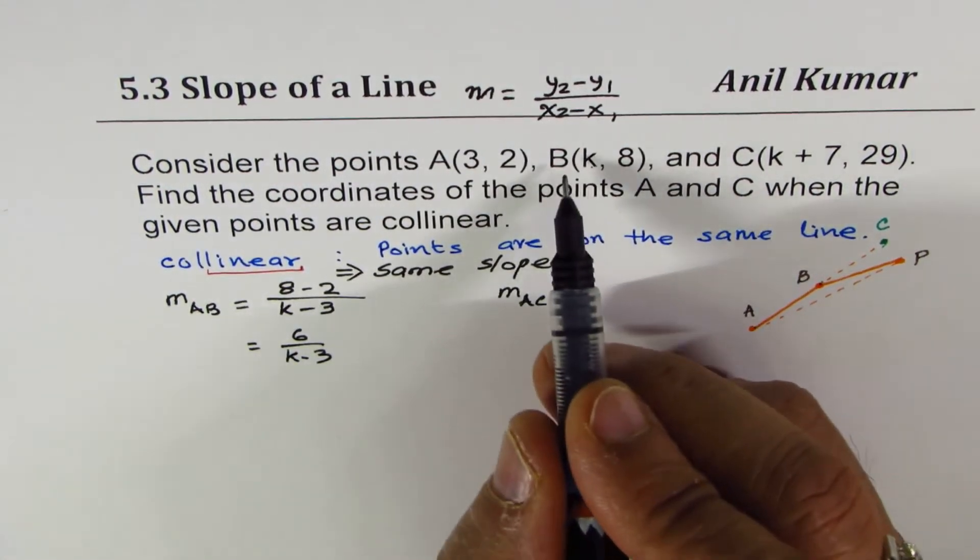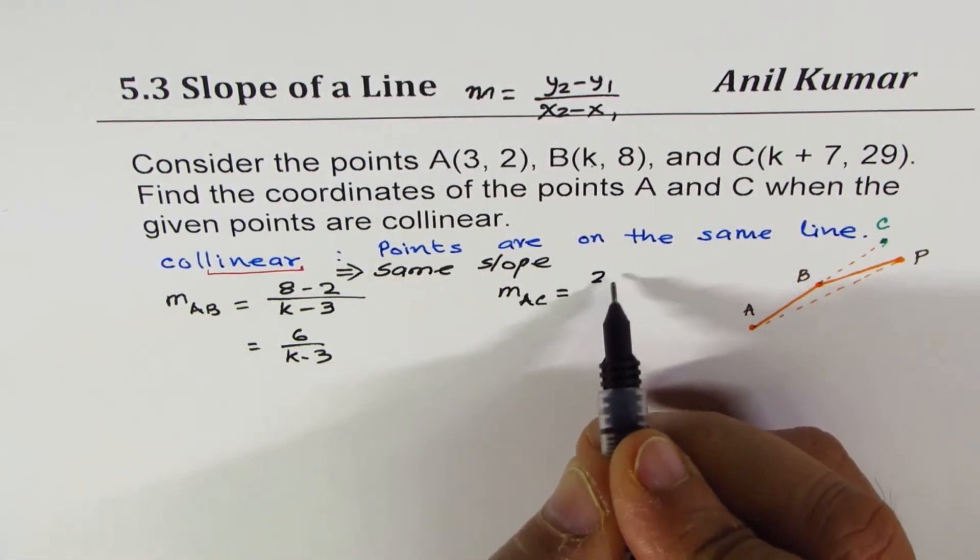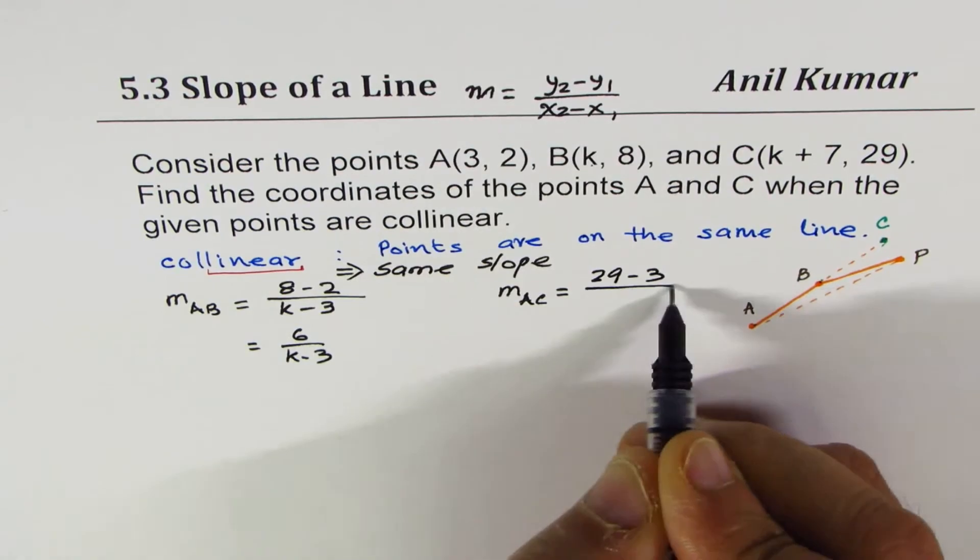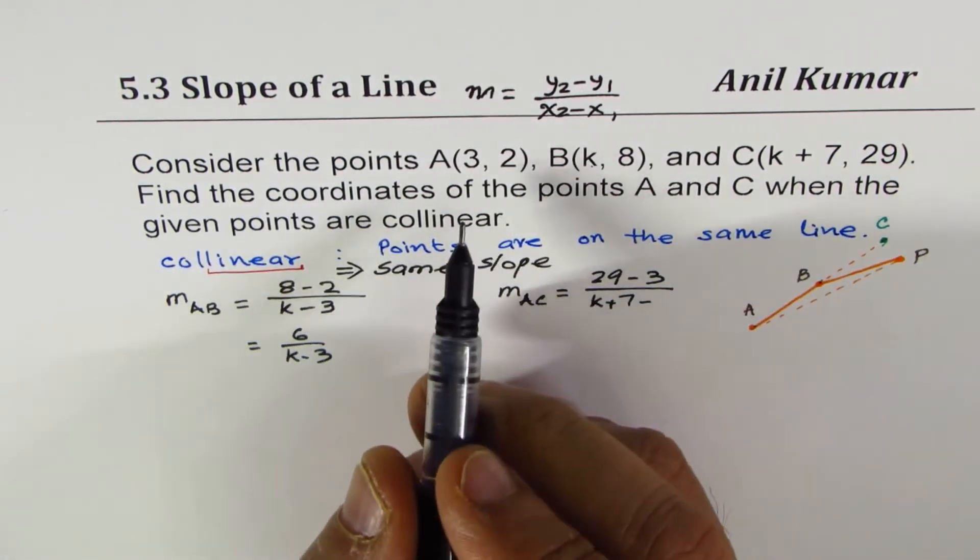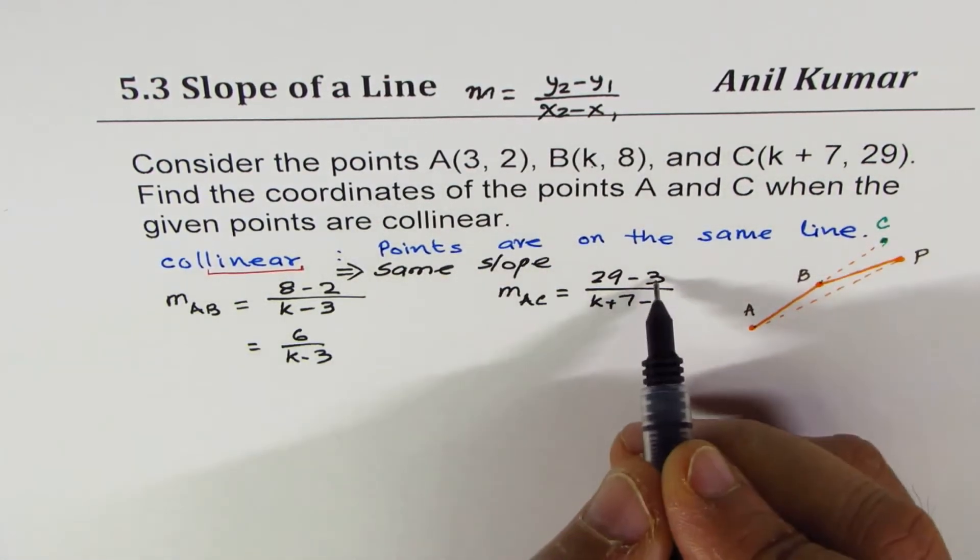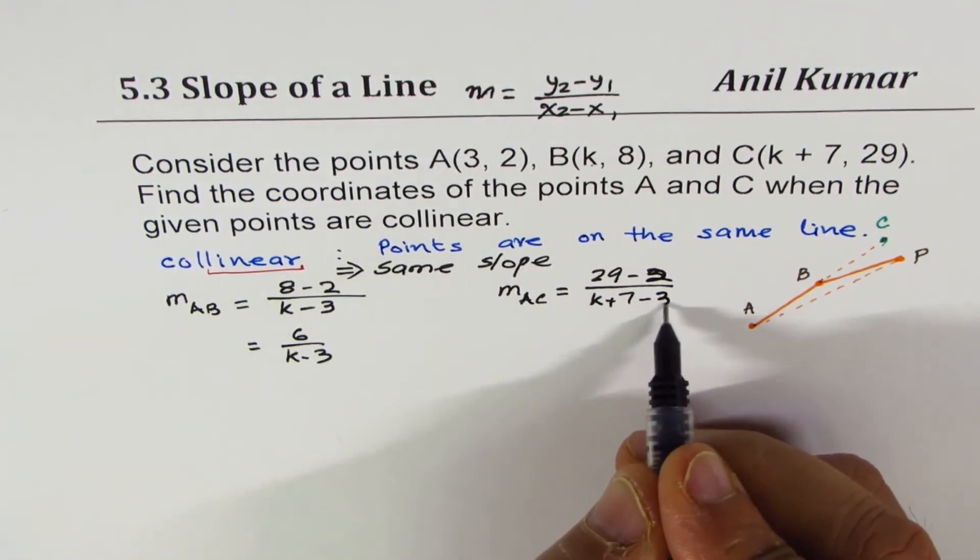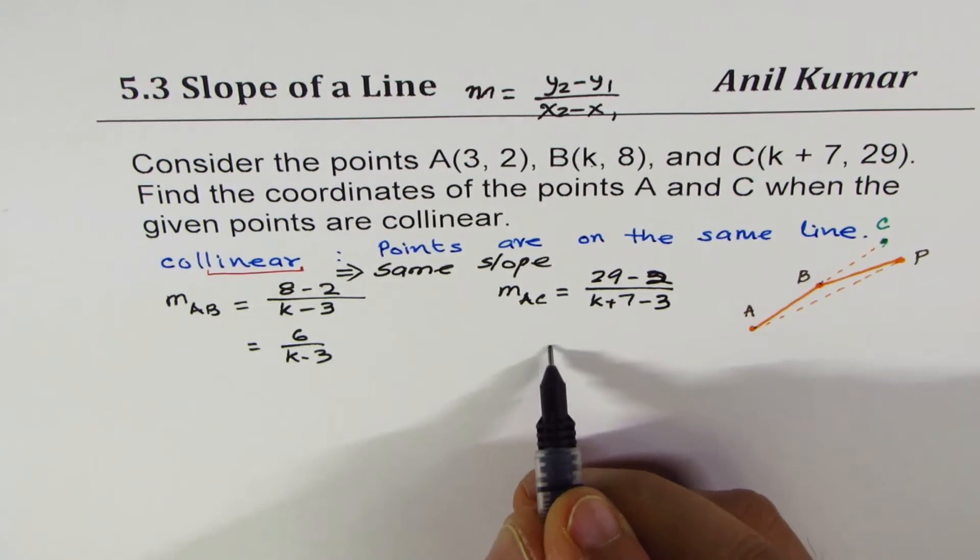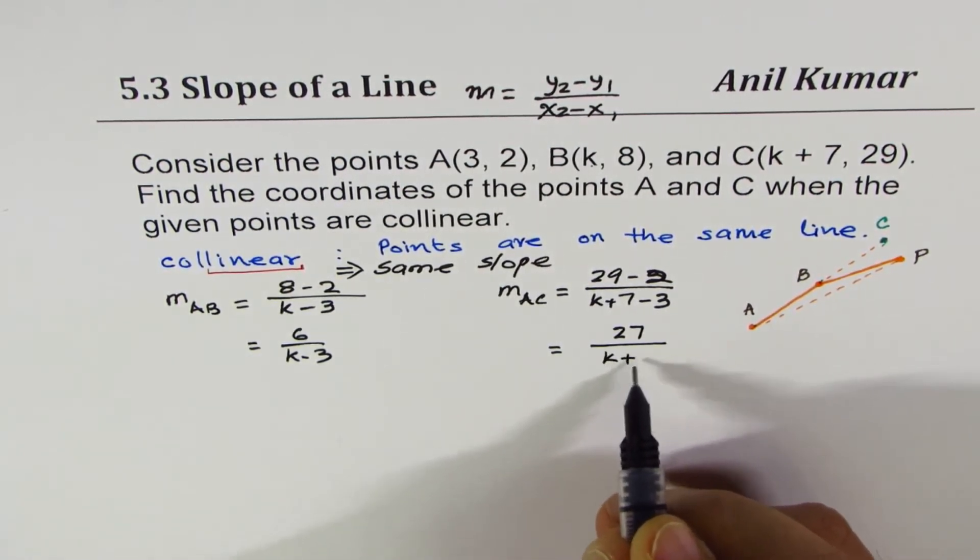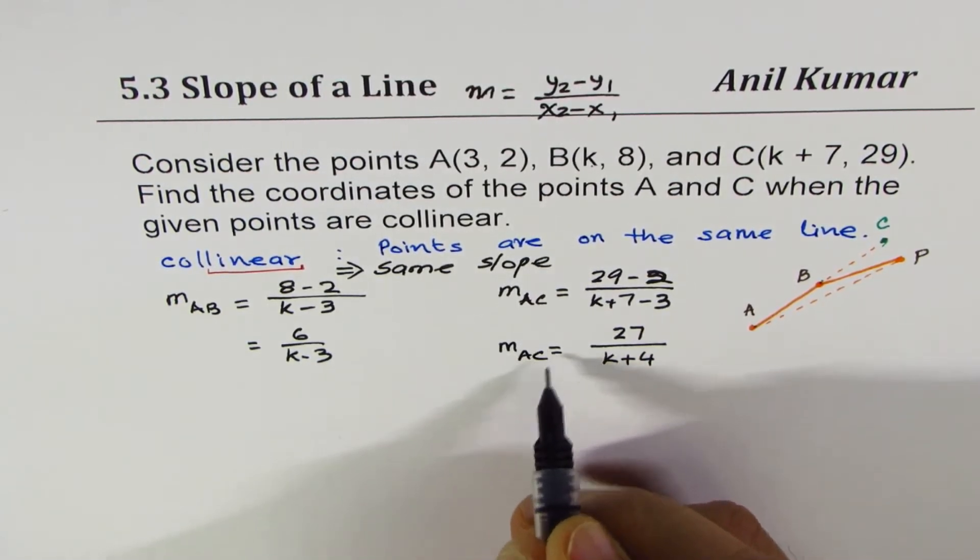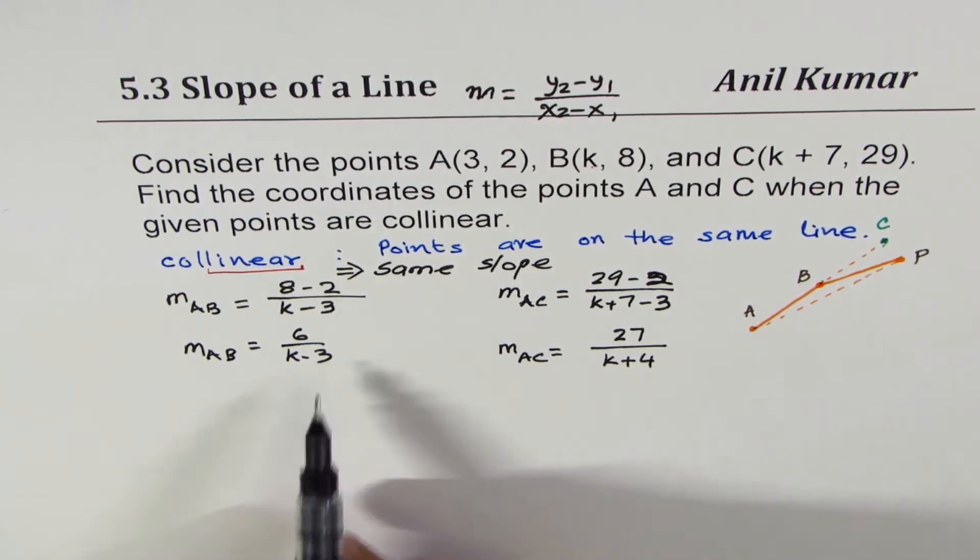For AC, A to C, 29 minus... I'm sorry, 29 minus 2. K plus 7 minus 3. This is the Y2 value. And that simplifies to 27 over K plus 4. This is A to C. Slope between A to B is 6 over K minus 3.